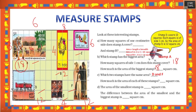Which two stamps have the same area? D and F — D is 3 × 4 and F is 4 × 3, both equal 12. Each of those stamps covers 12 square centimeters. The smallest stamp covers 4 square centimeters (stamp E). The difference between the smallest and the biggest is 18 − 4 = 14.